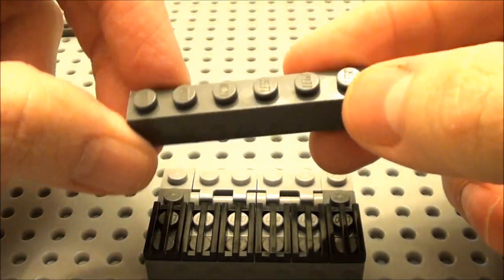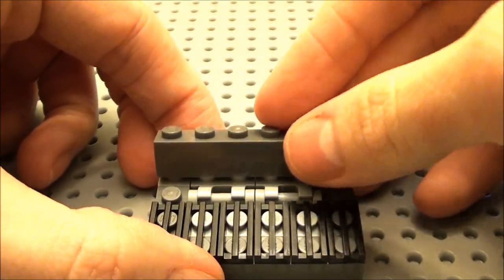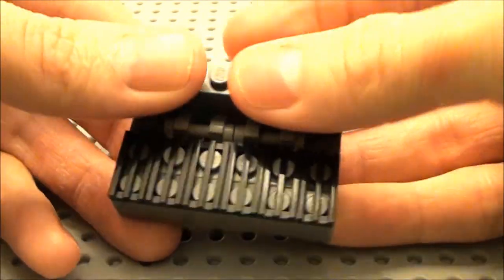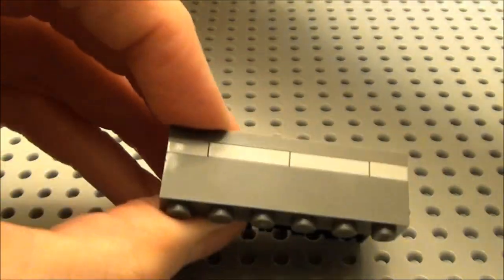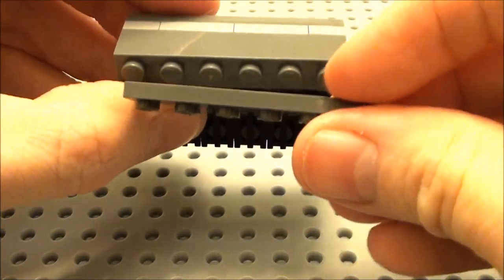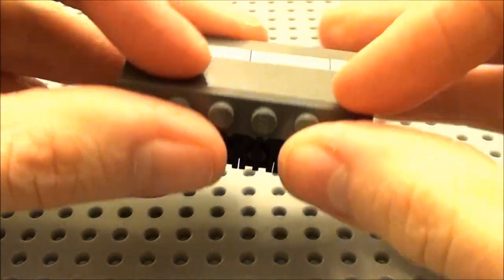Take a 1 by 6 brick. Place it here at the back just like that. A 1 by 6 plate. Place it on the top here.